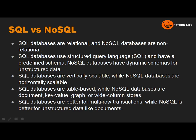NoSQL databases can store data as a document, as key-value pairs, as graphs, or as wide columns. These are the main types of NoSQL database storage formats.